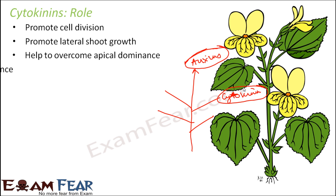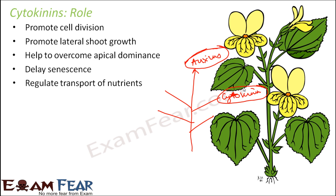Cytokinins help to overcome apical dominance and also delay senescence — they help to delay aging in plants. They do this by helping to transport nutrients properly to different parts of the plant. When a particular part of the plant is receiving a lot of nutrients, it stays healthy and its aging can be delayed. So cytokinins regulate the transport of nutrients and play important roles in the growth of a plant.